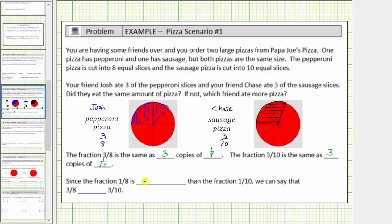And since one-eighth is greater than the fraction of one-tenth, we can say that three-eighths is greater than three-tenths. Going back to the pizzas, Josh ate more pizza because he ate three pieces that were bigger than the three pieces that Chase ate.